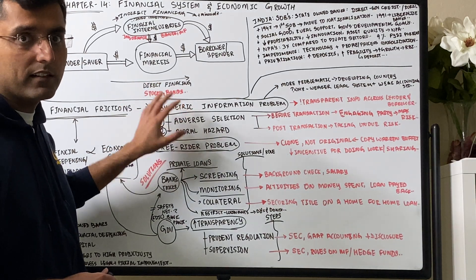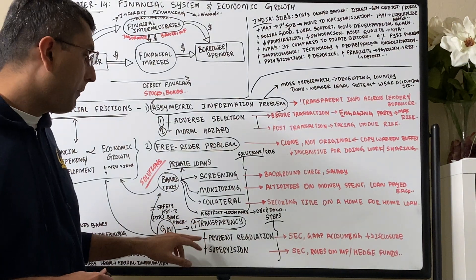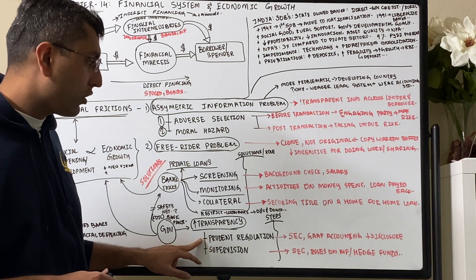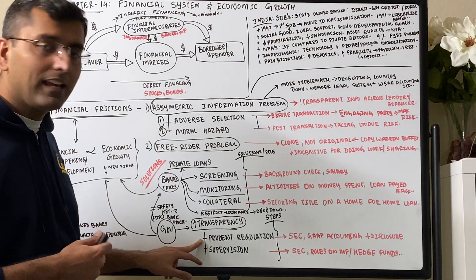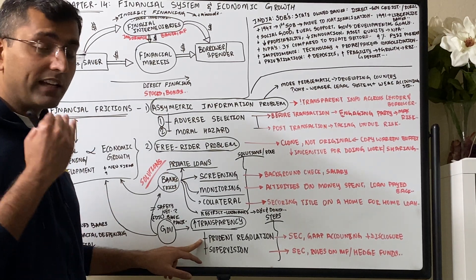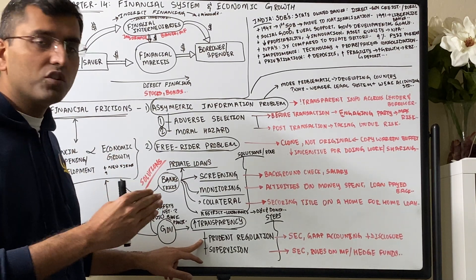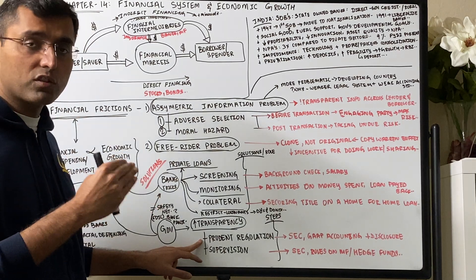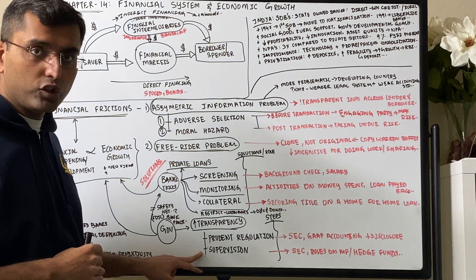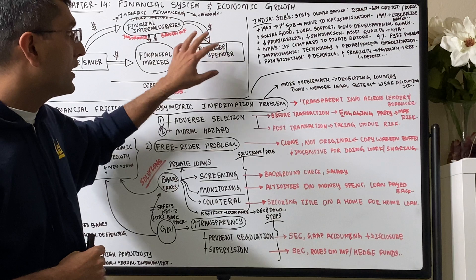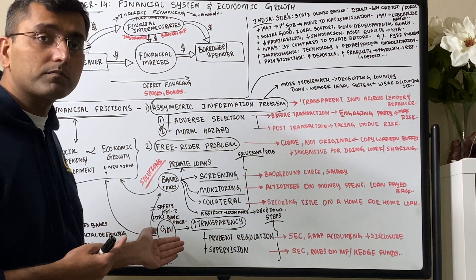The government can also help increase transparencies by prudent regulation to make sure that, like having institutions, financial institutions that are powerful like the Security and Exchange Commission, SEC, supporting accounting standards and regulations. In the United States there's GAAP accounting, so everyone should be doing it. And disclosure rules are very strict and having some sort of an oversight and supervision on these institutions, on these borrowers, to ensure that they are actually telling the right thing.